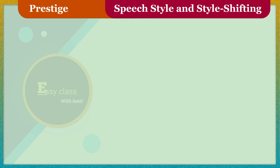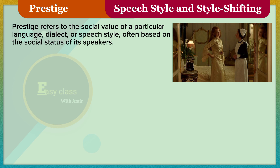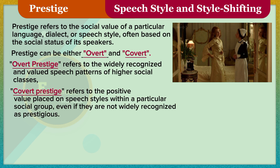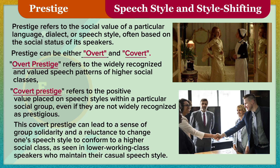Prestige refers to the social value assigned to a particular language, dialect, or speech style, often based on the social status of its speakers. Prestige can be either overt or covert. Overt prestige refers to the widely recognized and valued speech patterns of higher social classes. Covert prestige refers to the positive value placed on speech styles within a particular social group, even if they are not widely recognized as prestigious. This covert prestige can lead to a sense of group solidarity, and a reluctance to change one's speech style to conform to a higher social class, as seen in lower-working-class speakers who maintain their casual speech style.